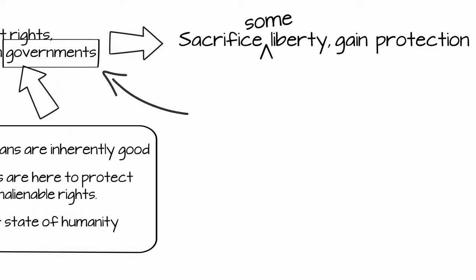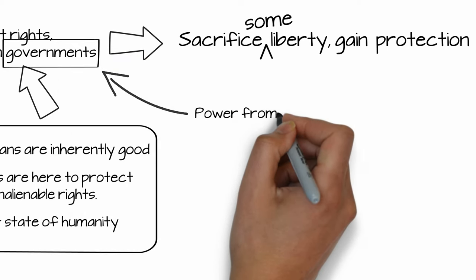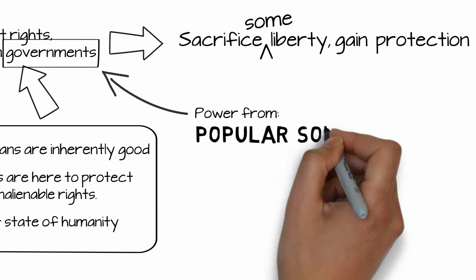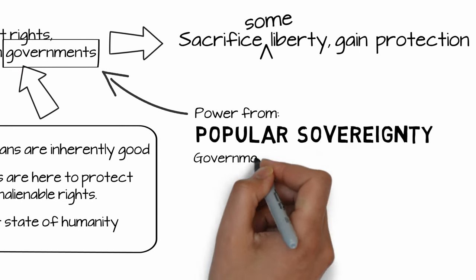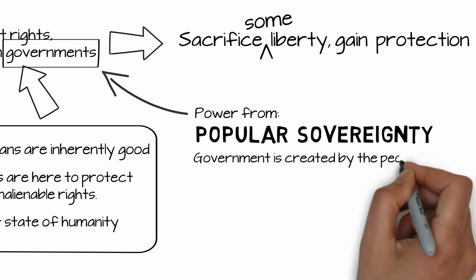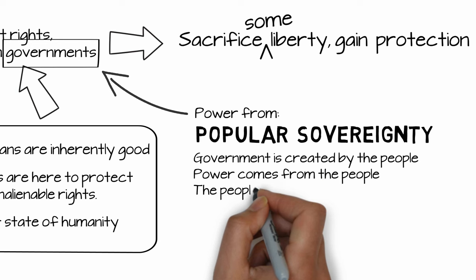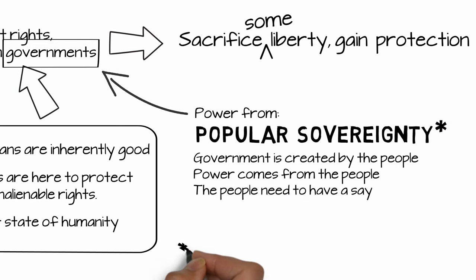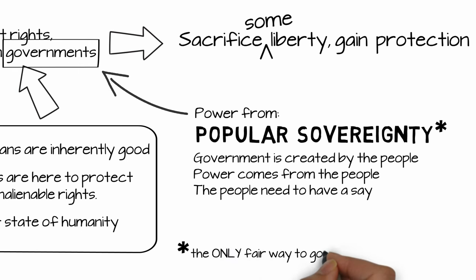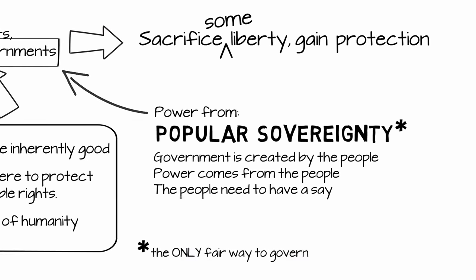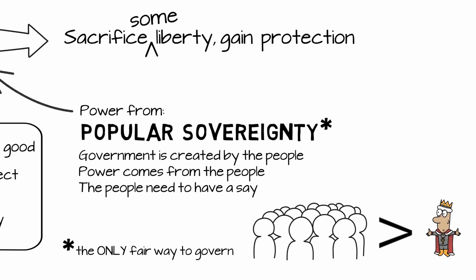Through his explanation of the social contract, Locke promotes the idea of popular sovereignty. Popular sovereignty is the belief that government is created by the members of social contracts, and that its power comes directly from them. Not only does the power come from the people, but they should also have some say in the way their society is run. Locke says that popular sovereignty is the only way to fairly govern any social contract. Because the ultimate power comes from the people and not God, any society where the people can't make decisions about how to protect their own rights could form a new government, but what happens then is in the next video.